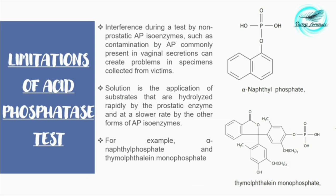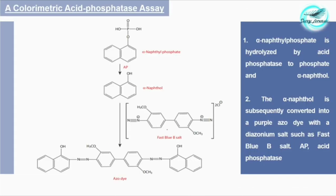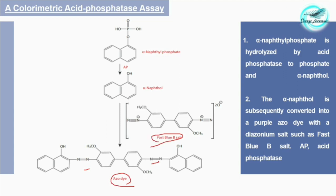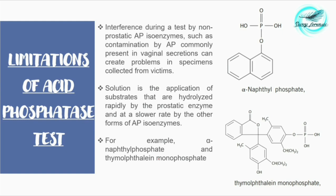For example, using sodium alpha-naphthyl phosphate as the substrate: acid phosphatase catalyzes the removal of the phosphate group, producing alpha-naphthol. The alpha-naphthol is then treated with fast blue B salt — a diazonium salt — forming a purple azo dye, which indicates the presence of semen. In summary, alpha-naphthyl phosphate is hydrolyzed by acid phosphatase to phosphate and alpha-naphthol; alpha-naphthol is subsequently converted to a purple azo dye with fast blue B salt.